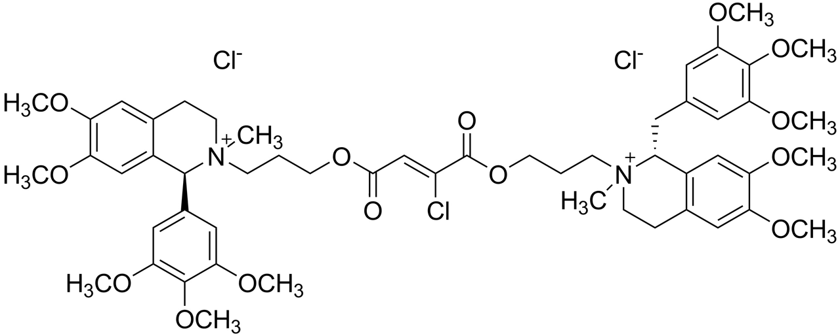History. Gantacurium represents the third generation of tetrahydroisoquinolinium (THIQ) neuromuscular blocking drugs in a long lineage of compounds invented by medicinal chemists and scientists at Burroughs Wellcome Co., Research Triangle Park, North Carolina. Unlike all other clinically used tetrahydroisoquinolinium agents except cisatracurium, Gantacurium is a stereo and regioselective single isomer.